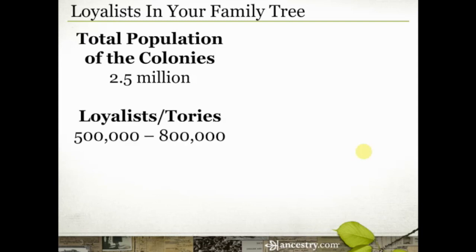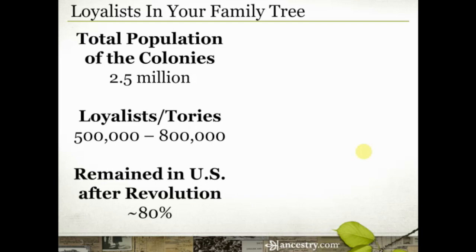The loyalists or Tories numbered anywhere from 500,000 to 800,000 people — that's the number of the total population that identified as loyalists to the British crown during the American Revolution. About 80% of those who identified as loyalists remained in the United States after the revolution. They reconciled themselves to the new government and stayed. So just because your family stayed in the U.S. does not mean that they sided with the patriots during the American Revolution.